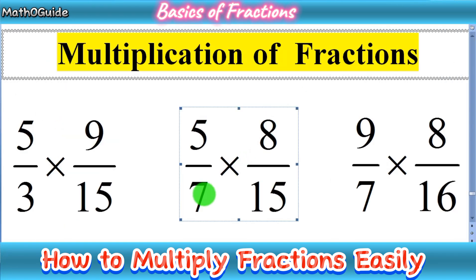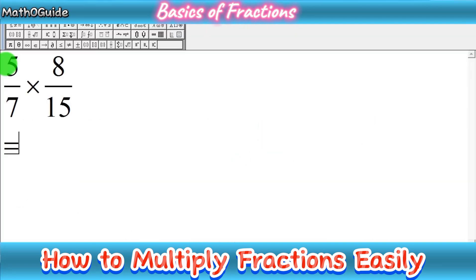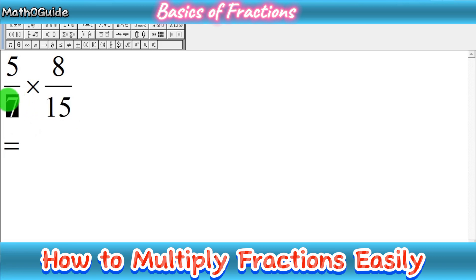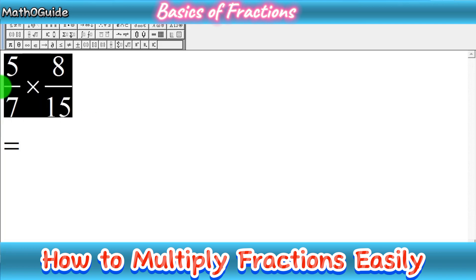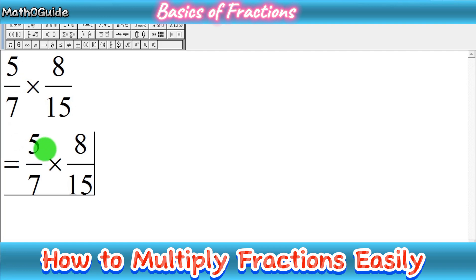Now we move to the second type: 5 over 7 multiplied by 8 over 15. Here you can see that 5 and 15 have a common factor, but 7 and 8 have no common factors, so we cannot cancel those two numbers. Simply rewrite the given fractions and check which factors can be cancelled.